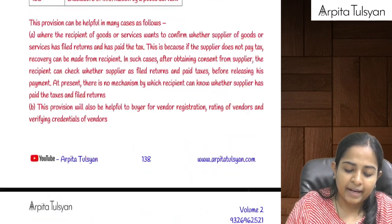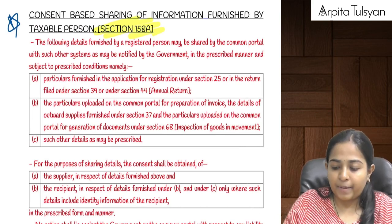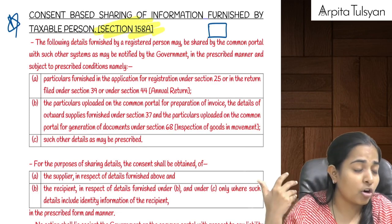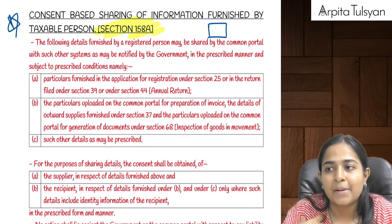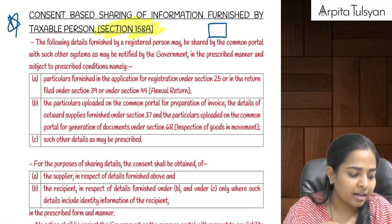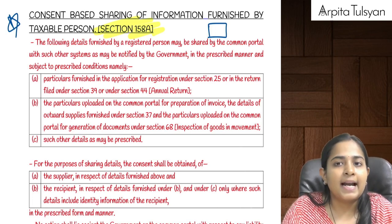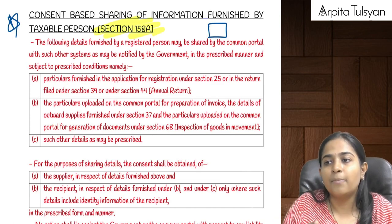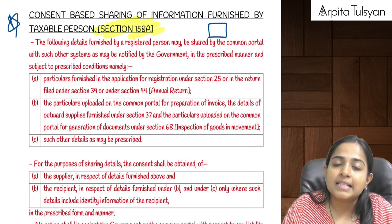Section 158A, along with the amended Rule 163, covers consent-based sharing of GST information. If I am a taxpayer entering into an amalgamation, merger, or other big business transaction, the other entity may want to verify my GST compliance. I cannot share my GST login credentials, but the GST portal gives an option to share your information by giving consent to the portal.